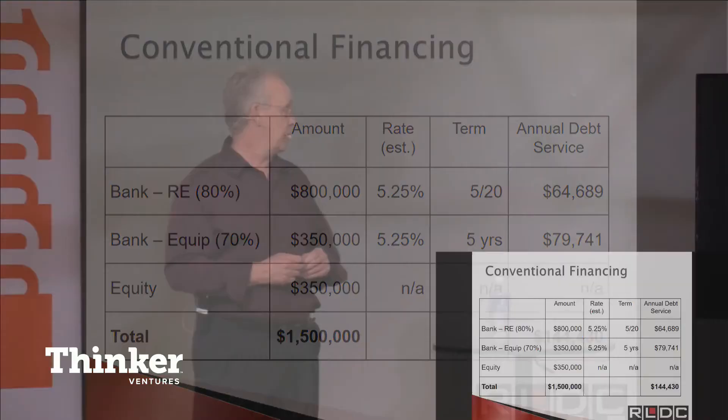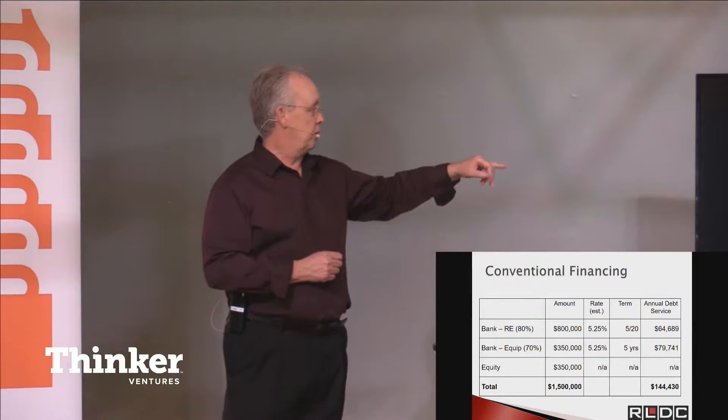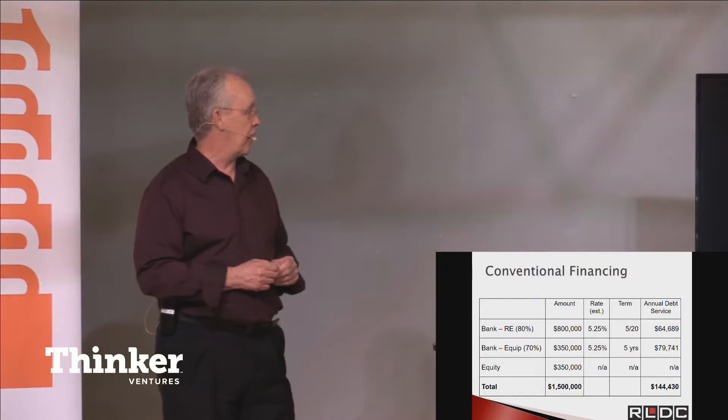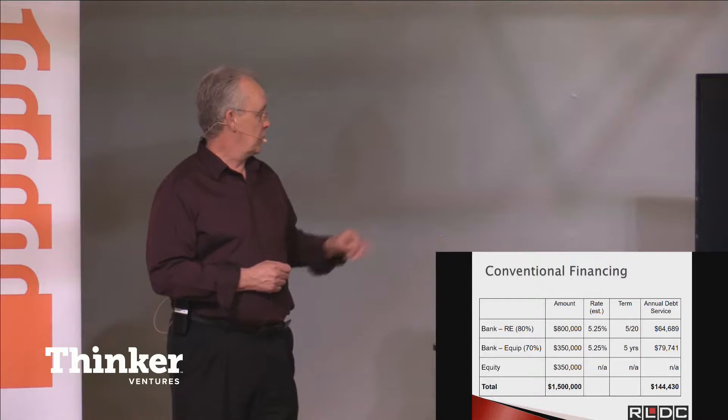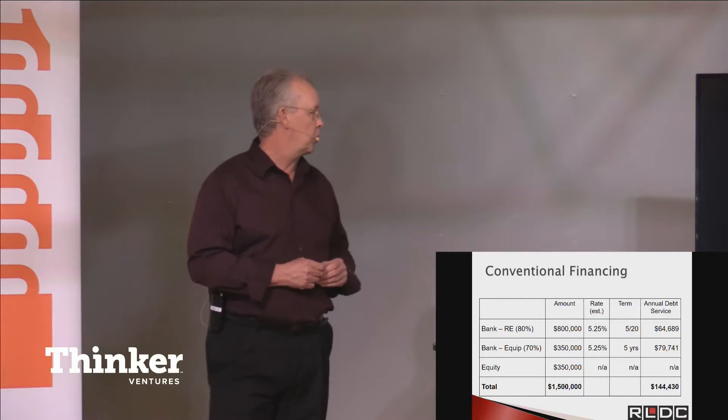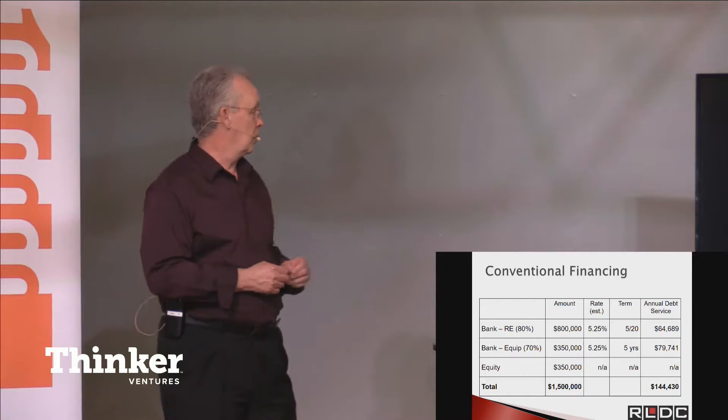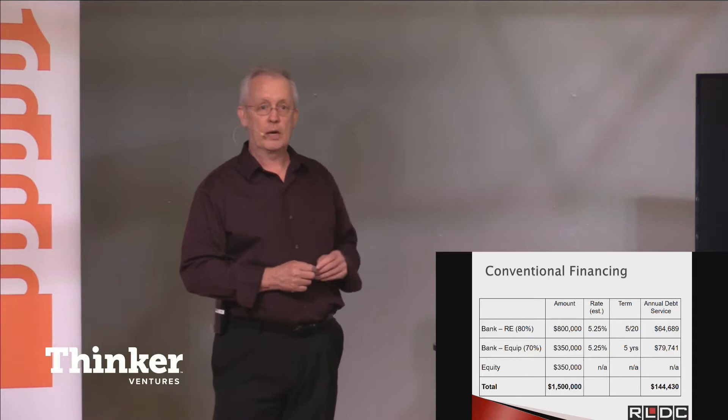If you go to a bank, this is how they might typically structure it. They'd lend 80% on the real estate. These are fairly typical of today's rates. The term means they would make a 20-year amortization. They set up the payments over 20 years, but they balloon it in five, gives them an opportunity to reprice the loan. Shows the annual debt service. For the equipment, they might go 70%. That's a variable, depends on new, used, what type of equipment. We're assuming 70%, same rate. Five years is fairly typical. So this borrower has to come up with $350,000 and they'll pay $144,000 a year.